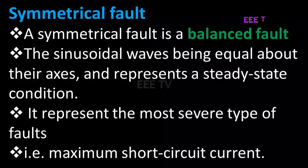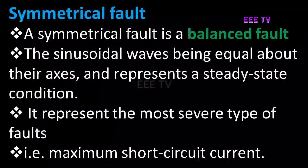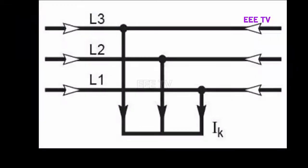The fault current is at the maximum short circuit current in this type of fault. In a 3-line system, a 3-line-to-line fault is a symmetrical fault. This is considered the severe fault or heavy short circuit fault.